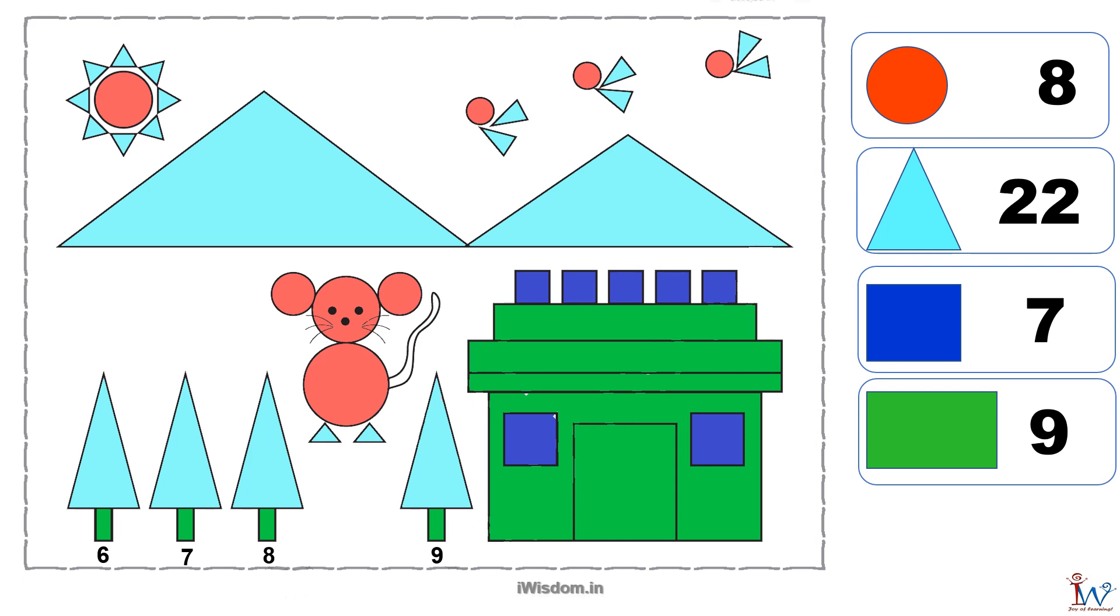Now that you have counted the shapes, name the shape that occurs the most and the shape that occurs the least. Well, twenty-two is the largest number, so triangle occurs the most. Seven is the smallest, so square occurs the least.